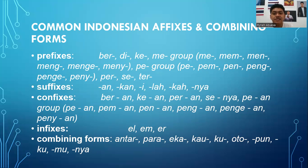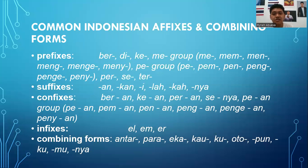The suffixes are: -an, -kan, -i, -lah, -kah, -nya. And the confixes are: per-an, ke-an, per-an, se-nya, pe-an, and groups like pam-an, pang-an, panga-an, and panya-an.